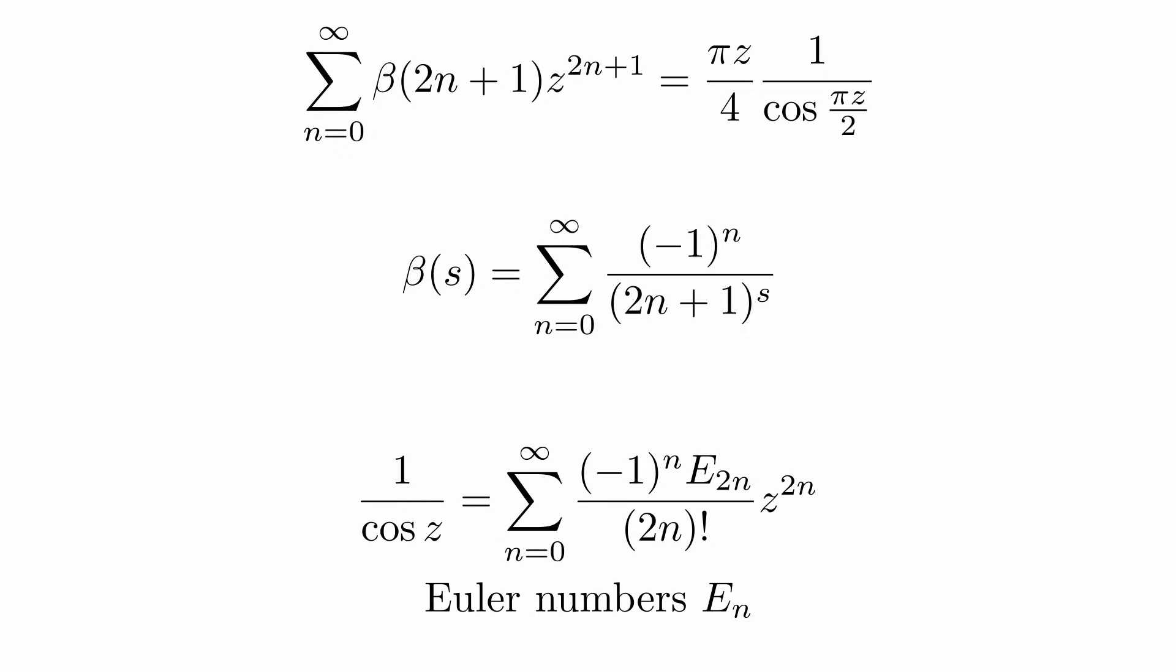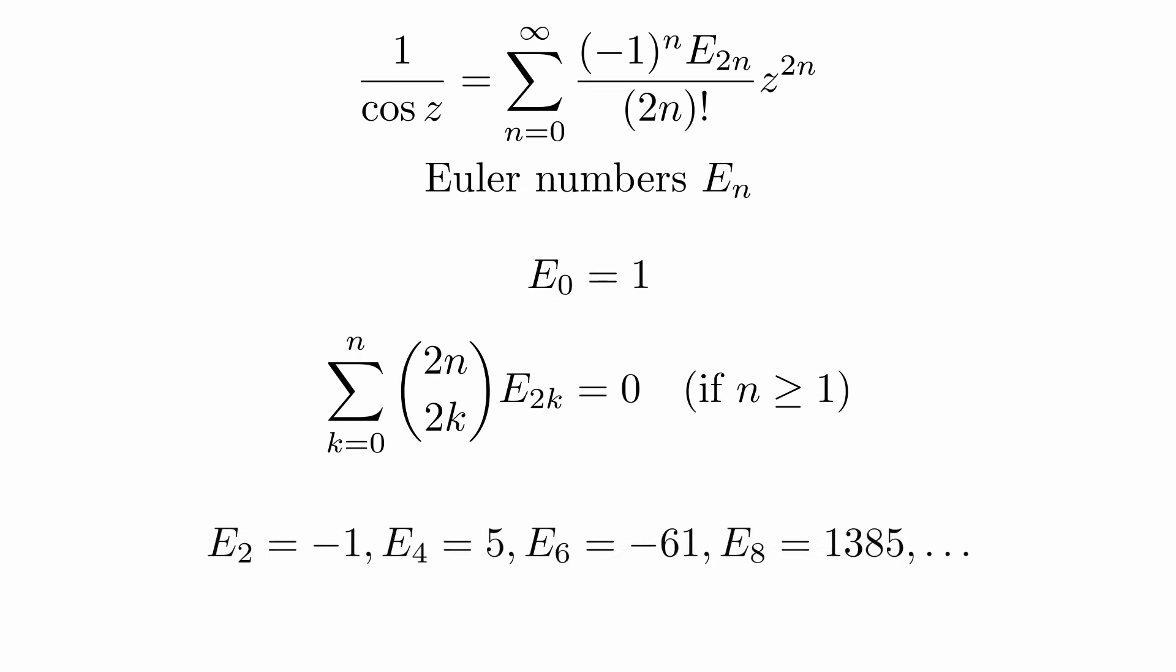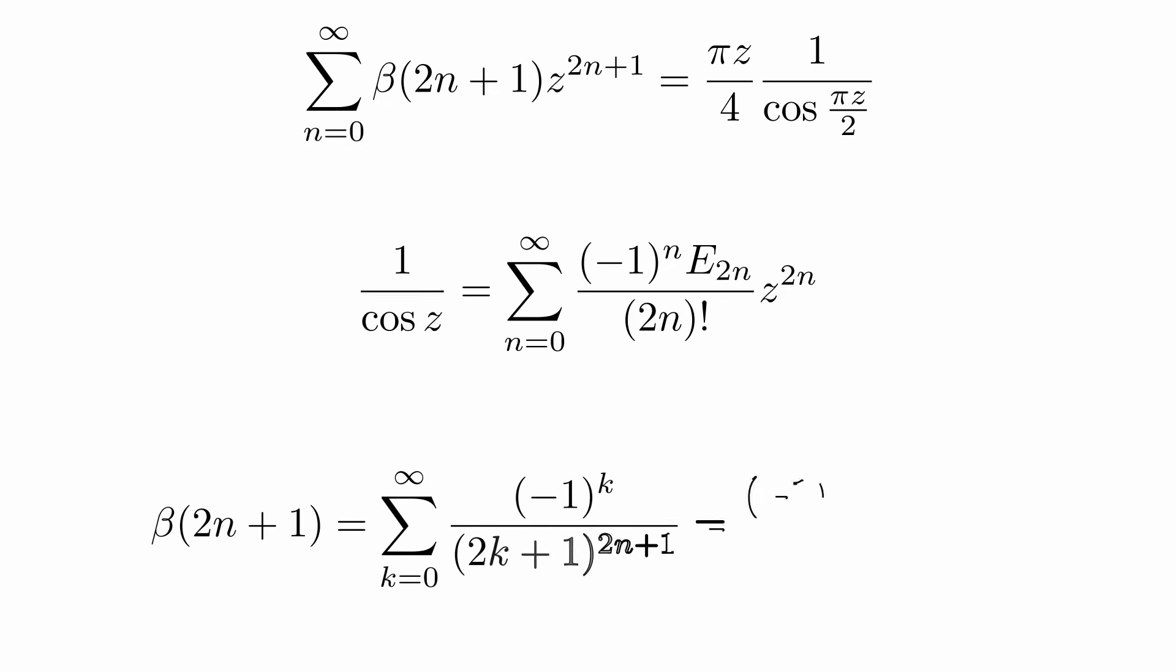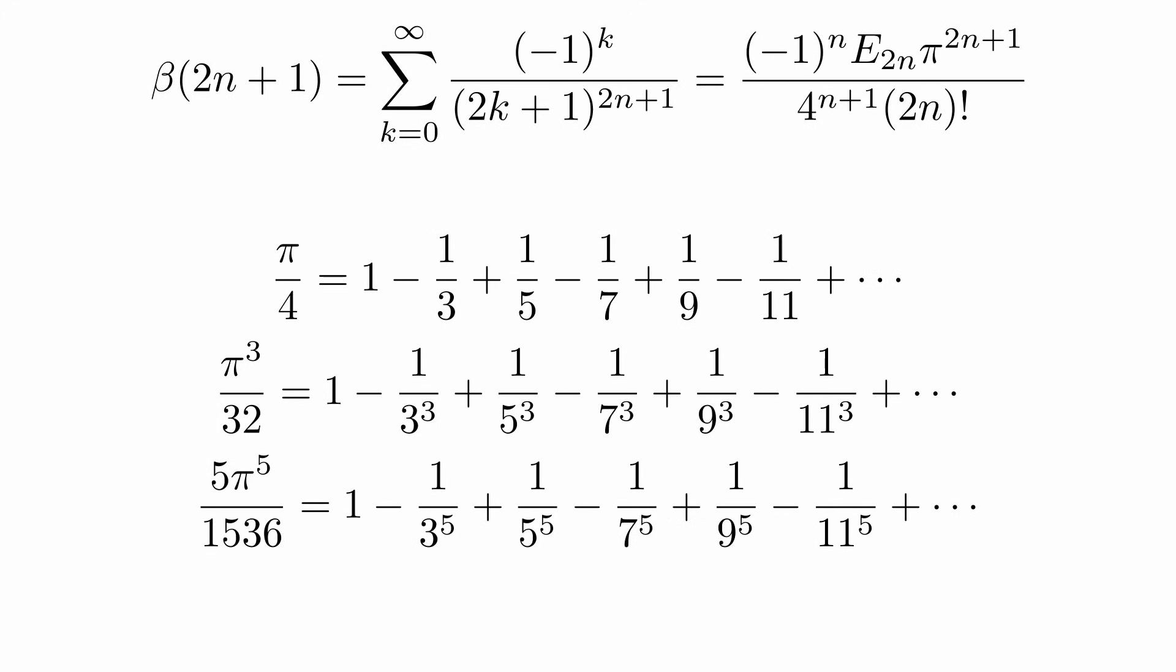Just as with the Bernoulli numbers, we get that the first Euler number is 1, and they satisfy this equation. From this we can calculate the first few Euler numbers. We can now once again compare coefficients in the generating function and the Taylor series on the right side, and get this expression for the beta function at odd integers. For example, for n equal to 0, this tells us that this series evaluates to pi over 4.